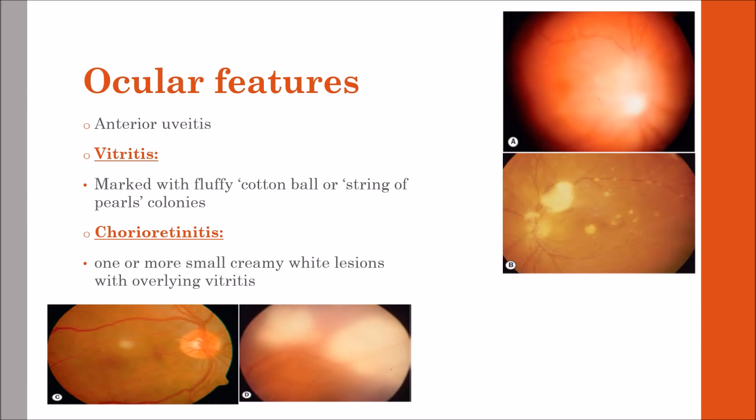As far as ocular involvement is concerned, the patient might present with anterior uveitis, which is relatively uncommon or mild in early disease but may become prominent later. Vitritis may be marked with fluffy cotton ball or string of pearls colonies, sometimes progressing to abscess formation as seen in the figure here.